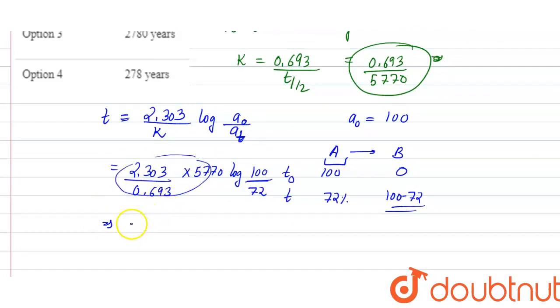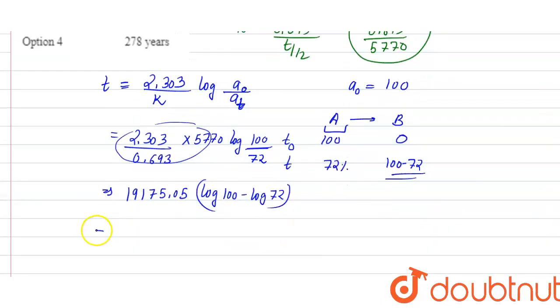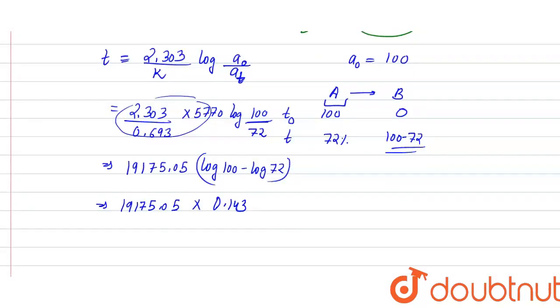The answer I get here will be 19175.05 into log of 100 minus log 72. When I solve this whole term, this time will come to me as 0.143 after calculating the log. Finally, when I solve this whole term, my answer is 2742.03 years.